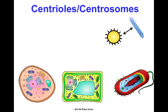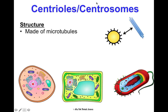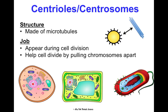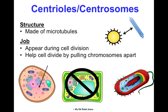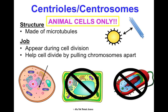Centrioles, or centrosomes, can look two different ways in pictures — I've included both terms since both appear in many textbooks. They're made of microtubules, and their job is to show up during cell division to help the cell divide by pulling chromosomes apart. Centrioles are found in animal cells only — not in plant cells or prokaryotic cells. We'll talk much more about them in Concept 3 when we learn about cell division.